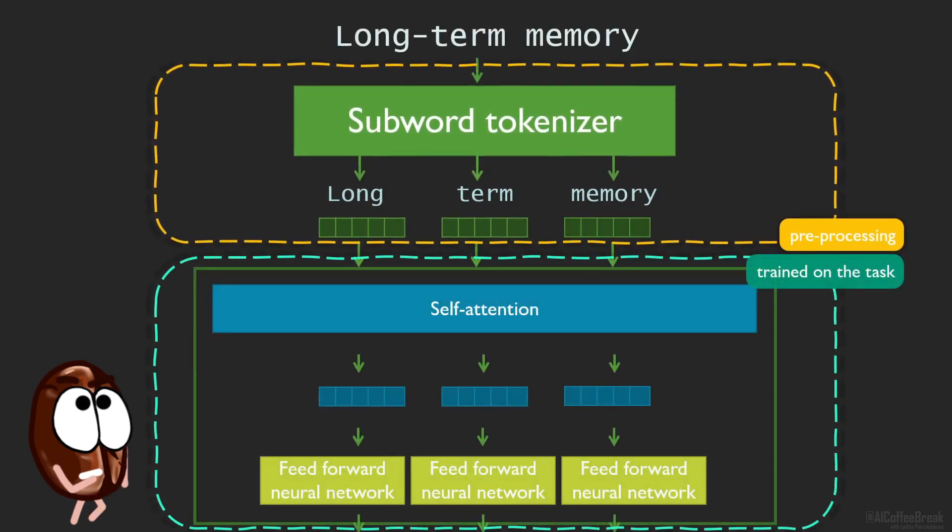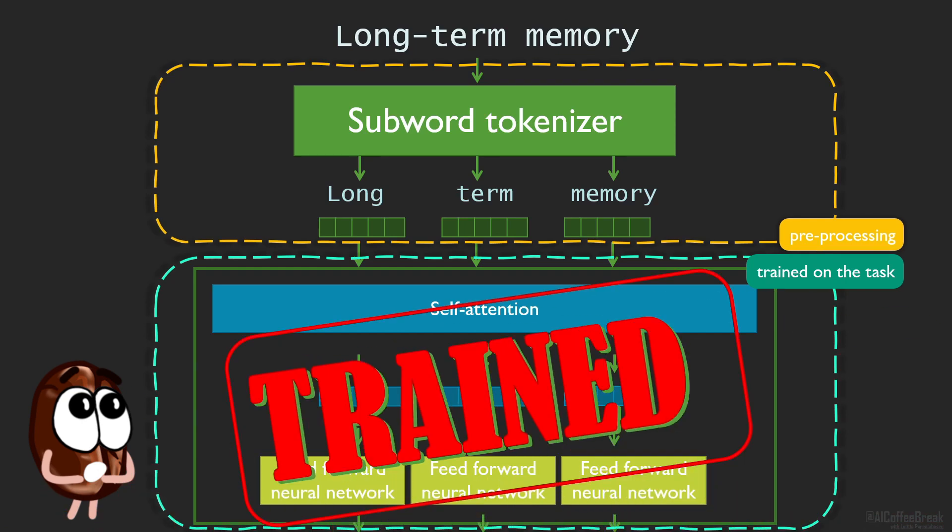Even more, the downside of tokenization is that on downstream applications you are kind of forced to use the same tokenizer as the model was trained with, because the trained model is very much dependent on the tokenization it is used to. Even though your task might benefit from other tokenizations, you now must stick with the initial ones. No, you are not allowed to see other tokenizers, Ms. Coffee Bean.